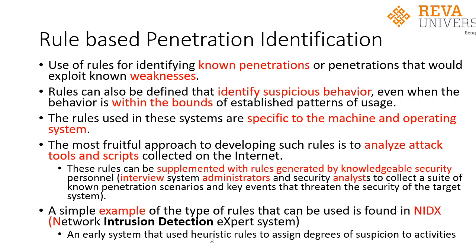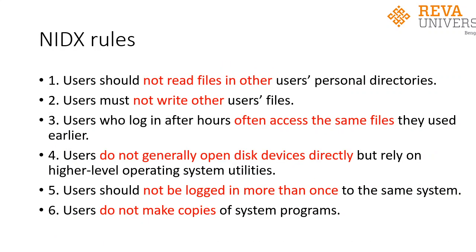NIDX was an early system which made use of heuristic rules to assign degrees of suspicion to activities. There are six rules it used to detect intruders. First, users should not read files in other users' personal directories — for example, user Sunil cannot read from user Smith's directories. Second, users must not write to other users' files; we can only write to our own files. Third, users who log in after hours often access the same files they used earlier. Fourth, users do not generally open disk devices directly but rely on higher-level operating system utilities.